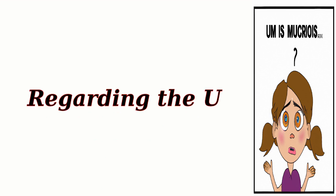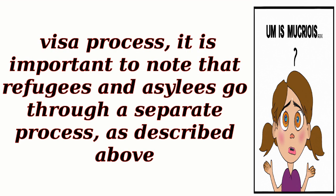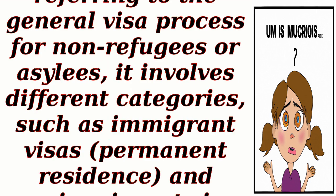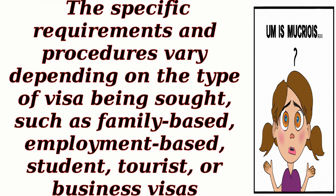Regarding the U.S. visa process, it is important to note that refugees and asylees go through a separate process, as described above. However, if you are referring to the general visa process for non-refugees or asylees, it involves different categories, such as immigrant visas (permanent residence) and non-immigrant visas (temporary stay). The specific requirements and procedures vary depending on the type of visa being sought, such as family-based, employment-based, student, tourist, or business visas.